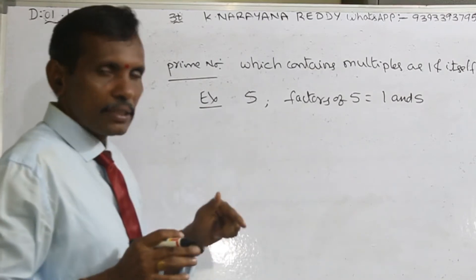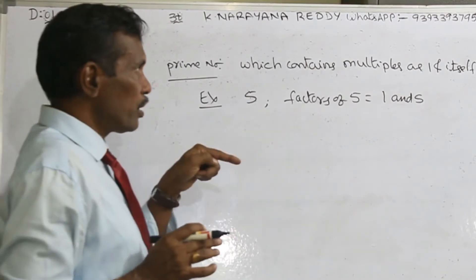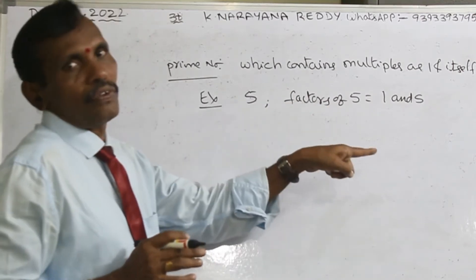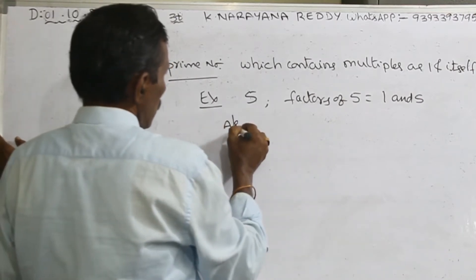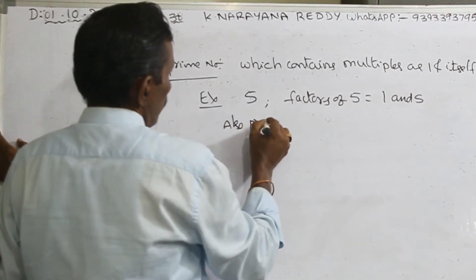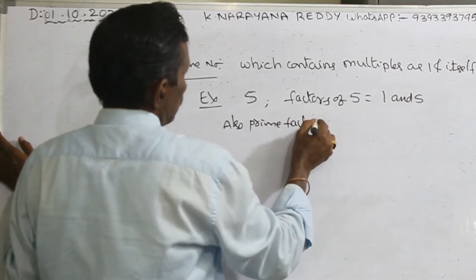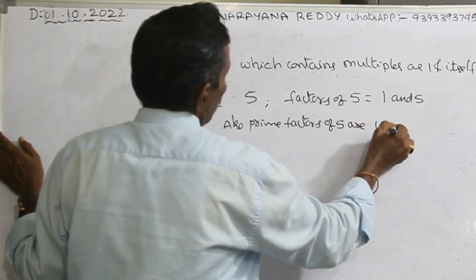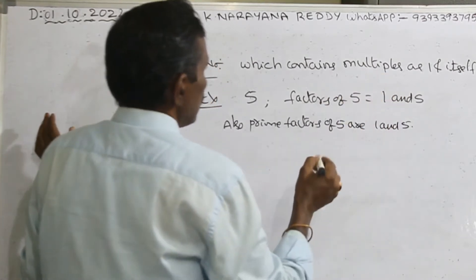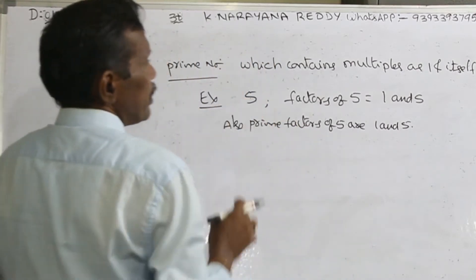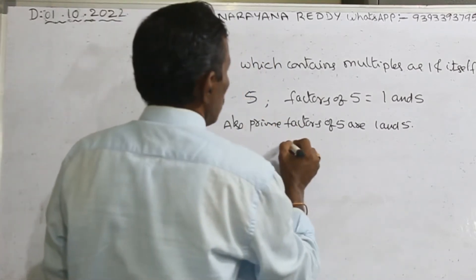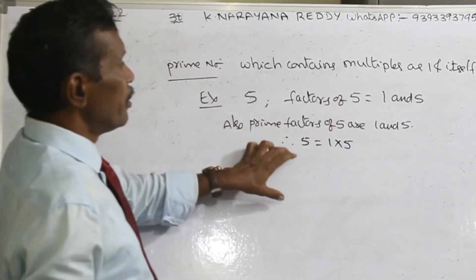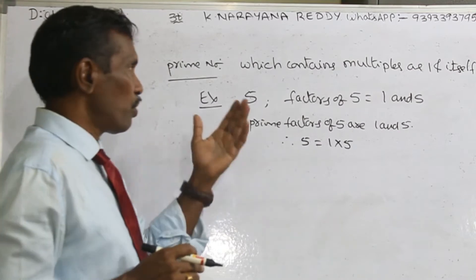So which is a whole number? Yes, this is a whole number. What are the factors of 5? 1 and 5. Prime factors of 5 are also 1 and 5. That means 5 is nothing but 1 times 5, therefore 5 equals 1 times 5.